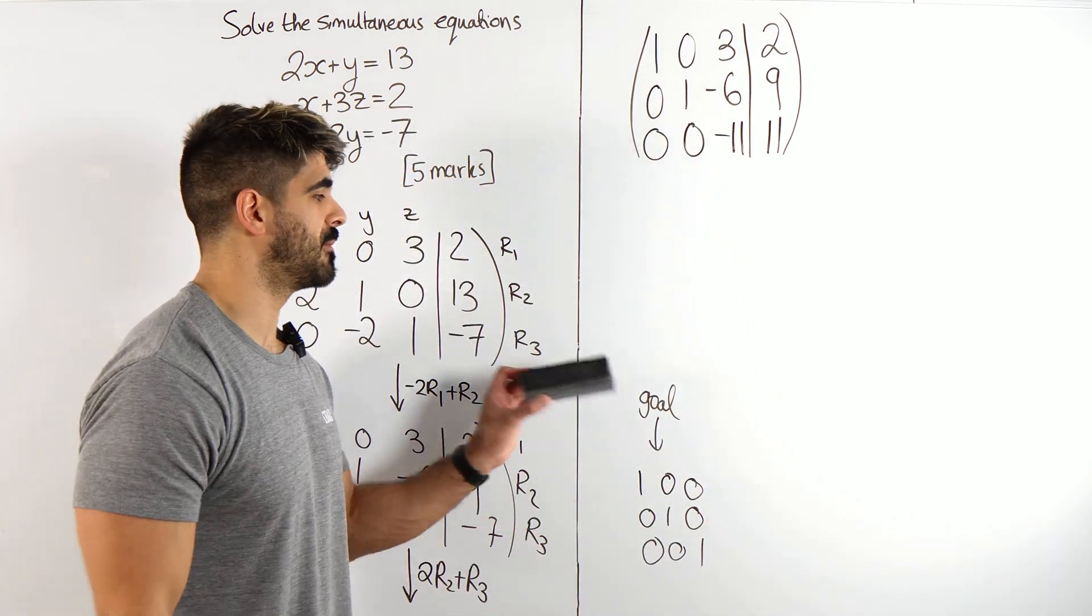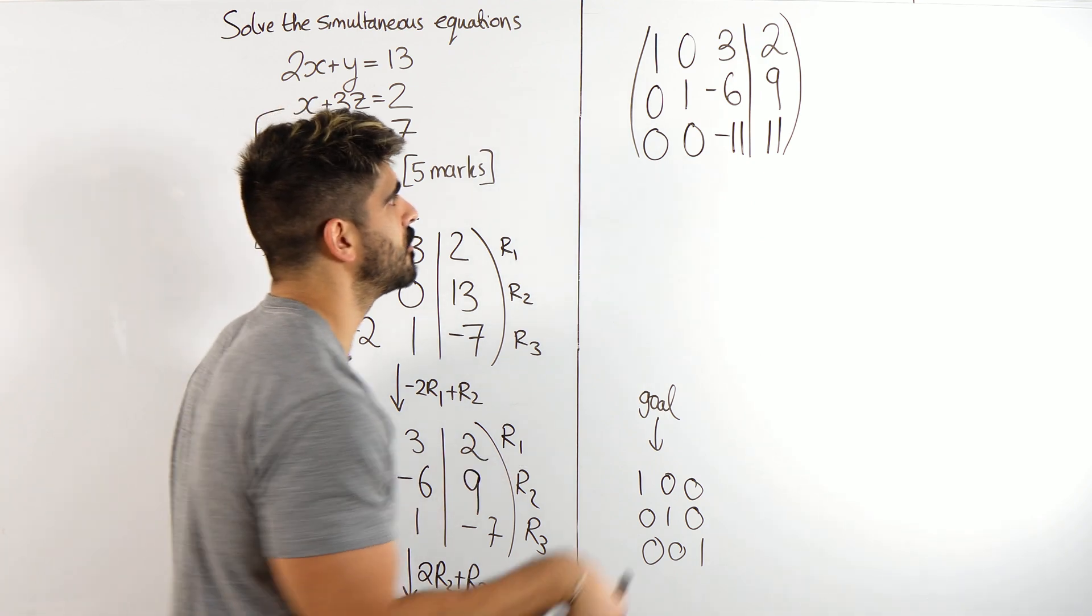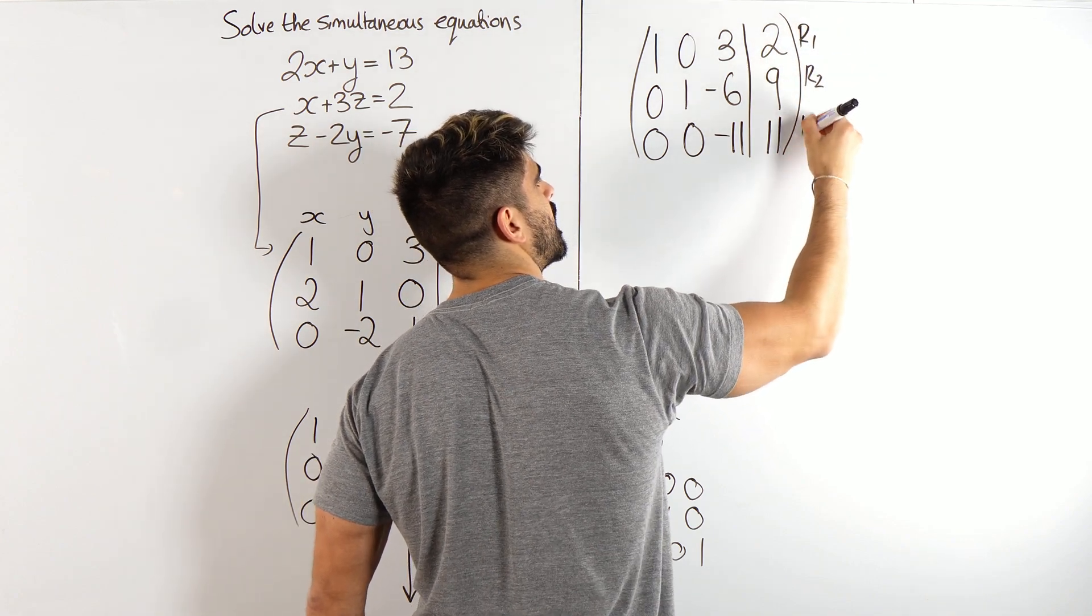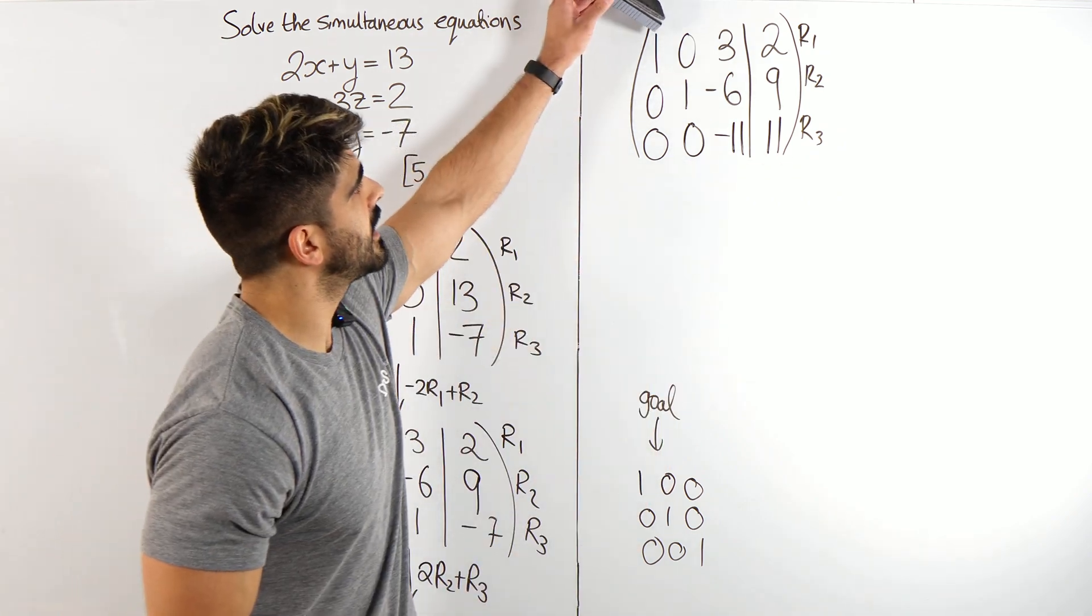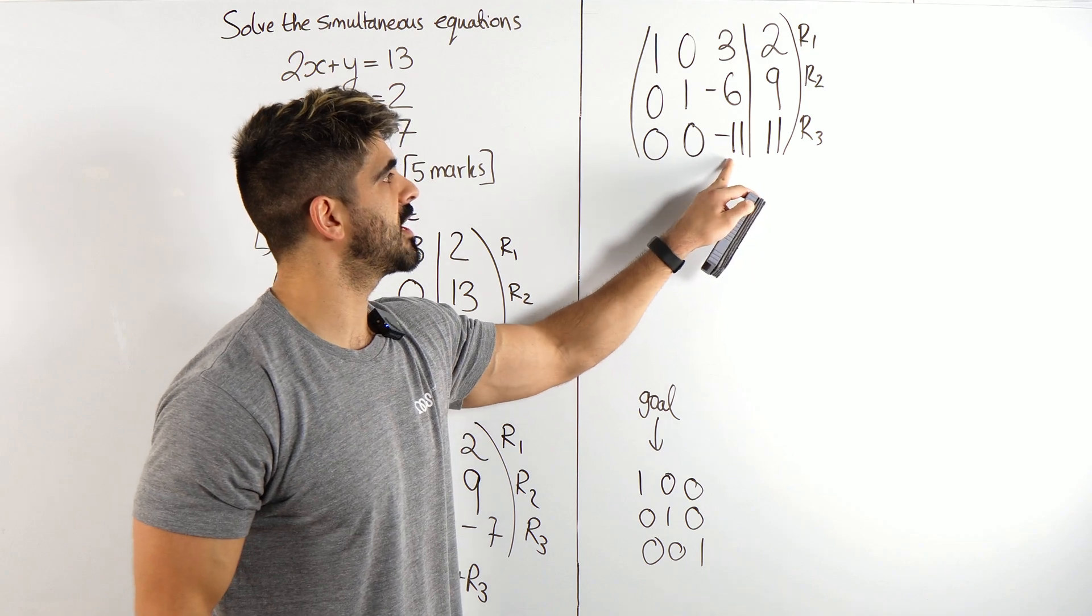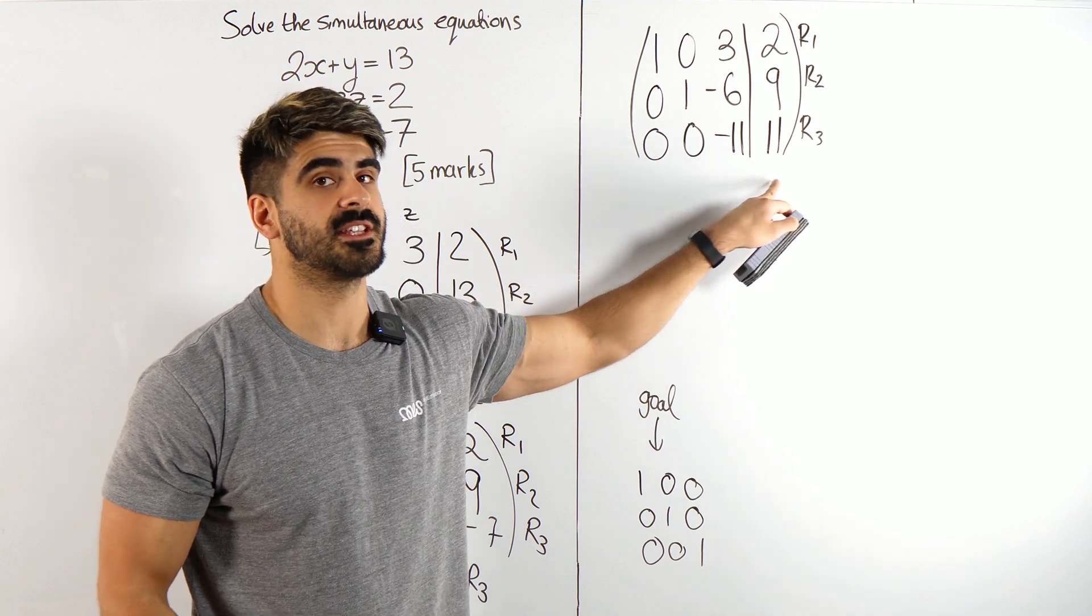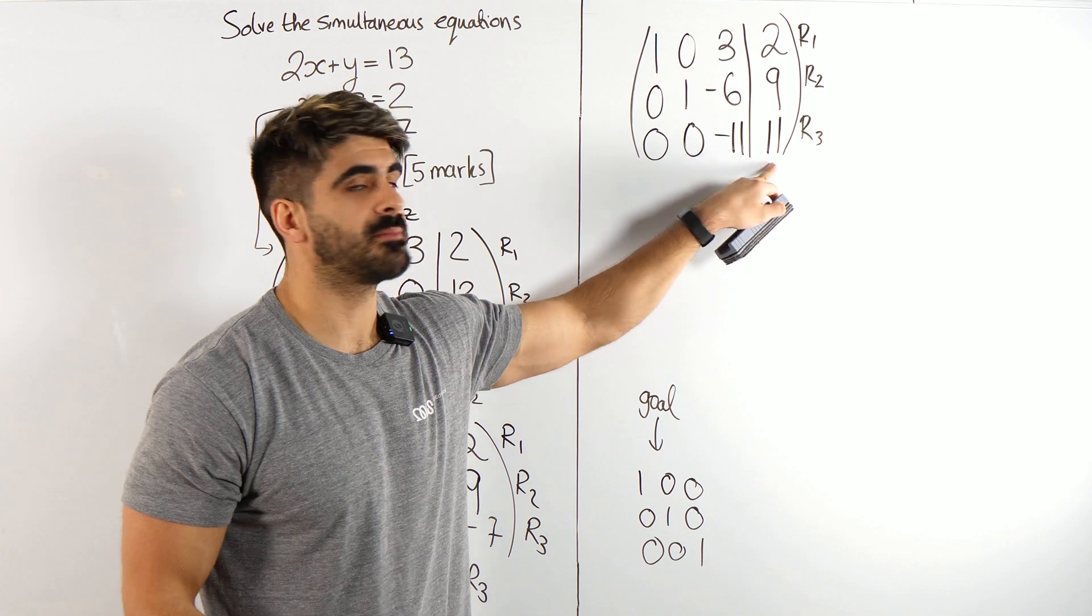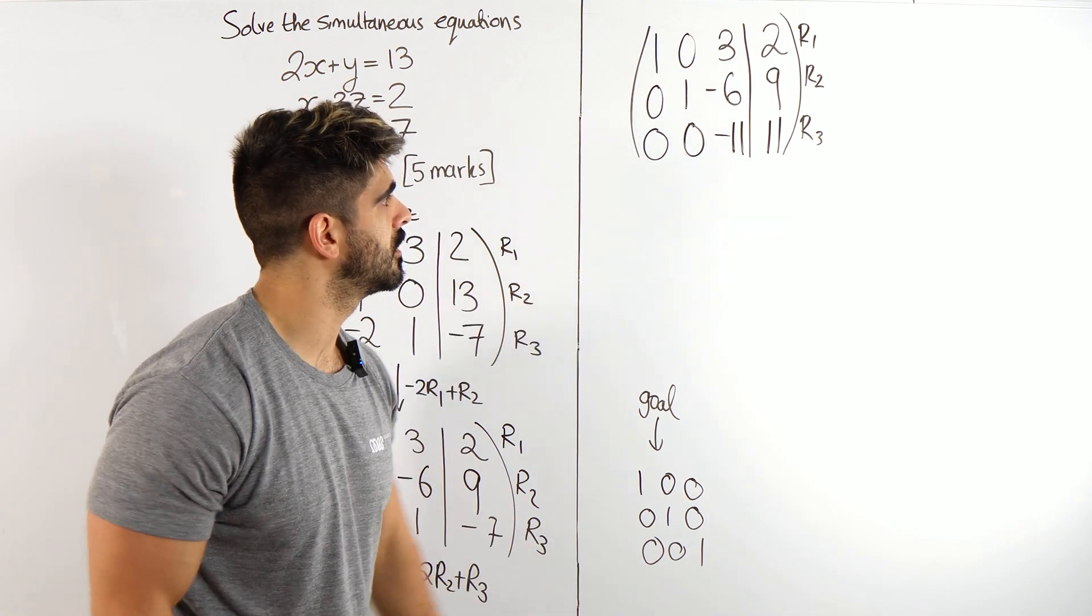You can actually pretty much finish this problem, but I'm going to show you guys how we're going to get the final answer. Now, we have row 1, row 2, and row 3. What does this line say? Remember, x, y, z. This is saying minus 11z is 11. That means z is minus 1. But I can really show that by just dividing both of these by minus 11. And that's going to turn into a 1.